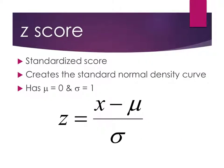Our discussion will now move into something called a z-score, which we're going to be using throughout the year. It's a standardized score. A z-score is helpful when comparing two similar kinds of data that are measured differently — for instance, comparing an ACT score to an SAT score. You can standardize those scores into z-scores to make them more easily comparable. The z-score creates the standard normal density curve, which always has a mean of 0 and a standard deviation of 1.